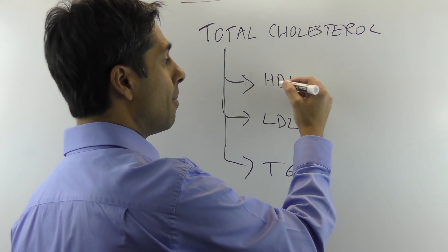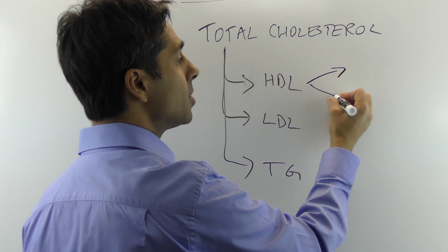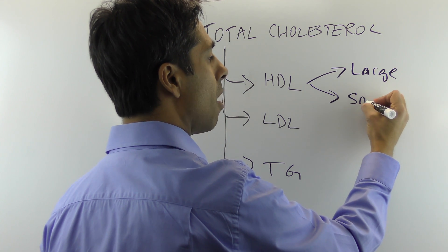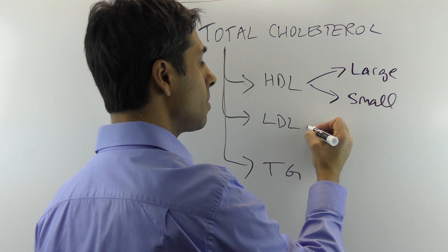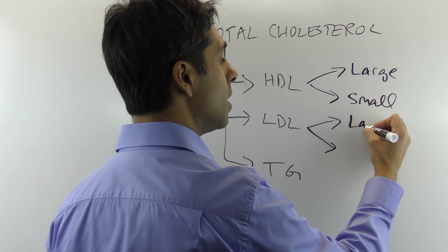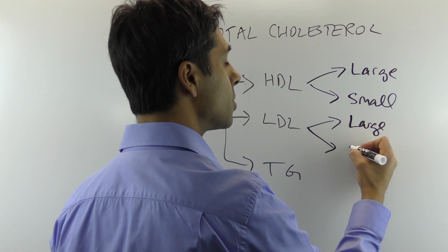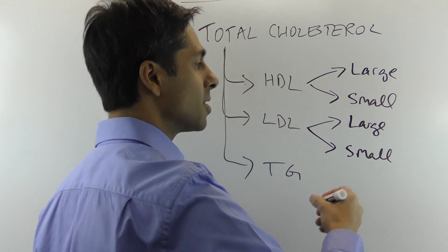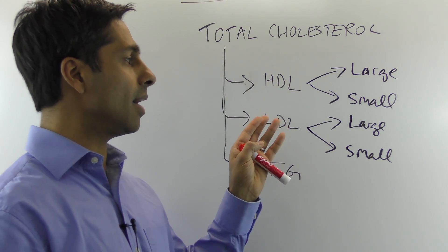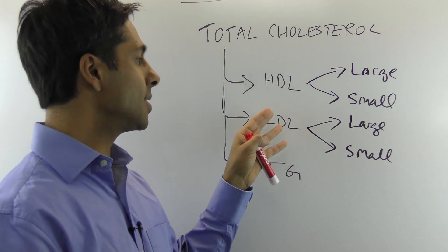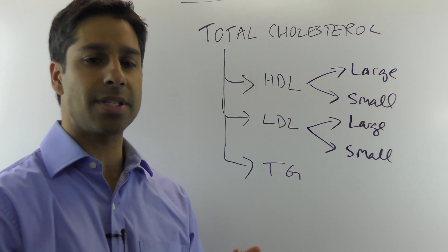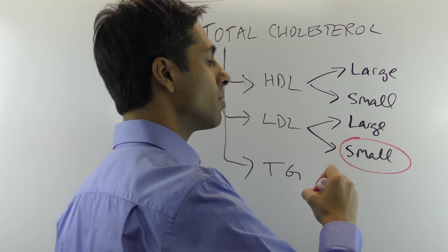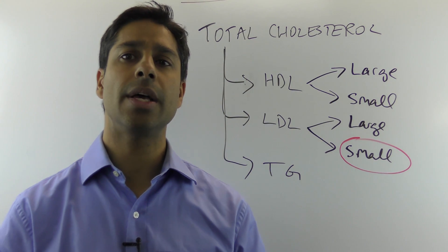So when we look at HDL cholesterol, it comes in two different shapes and sizes, actually a little bit more, but we'll call them just for argument's sake today small and large. And LDL also gets broken down into small and large. So when we look at that part of it, HDL comes in two different sizes, LDL comes in two different shapes and sizes.